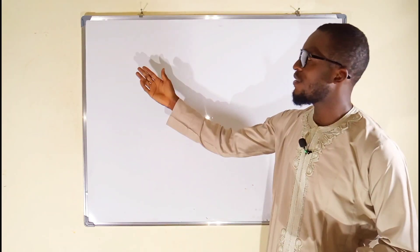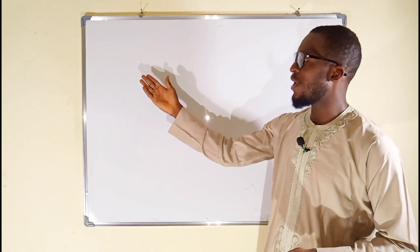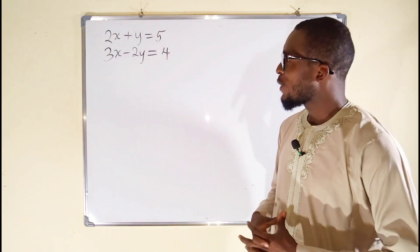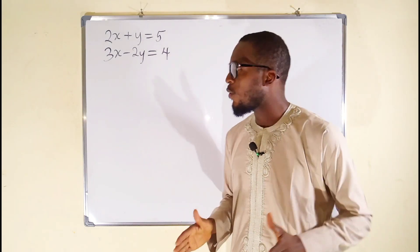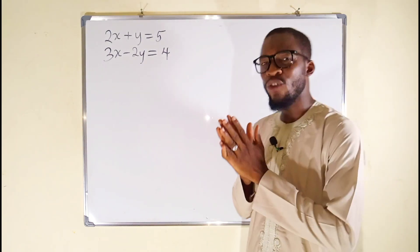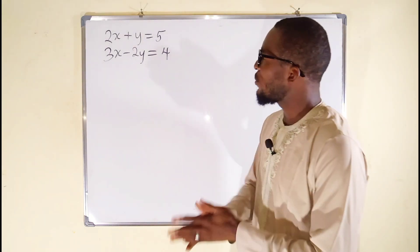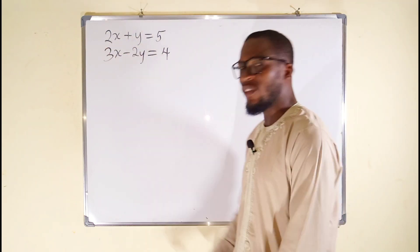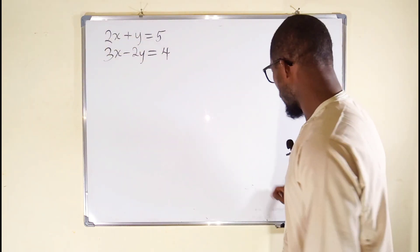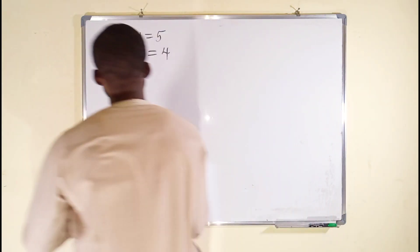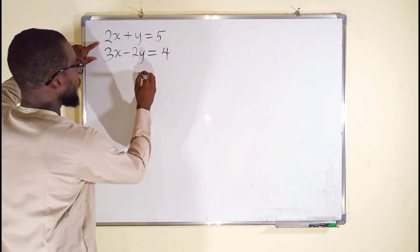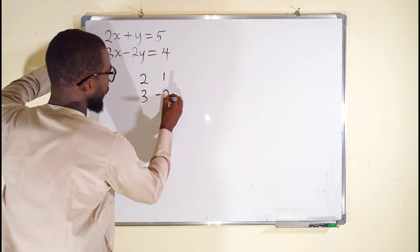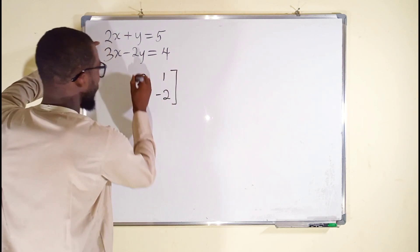First, we have this system of linear equations. The first thing we need to do is form a matrix of the coefficients of the unknown variables. The coefficients are 2, 3, 1, and negative 2. So let's form this matrix: we have 2, 1, 3, negative 2.